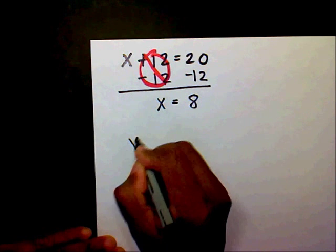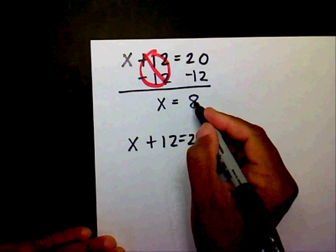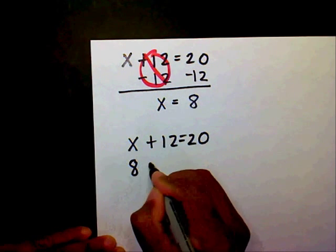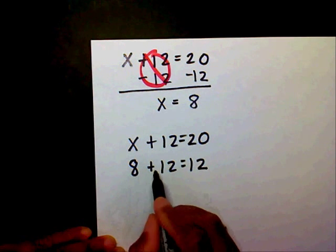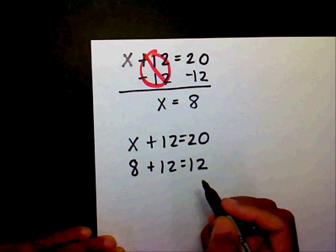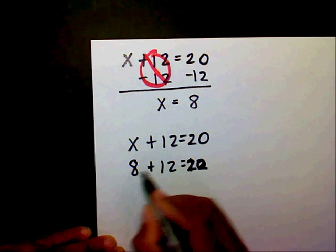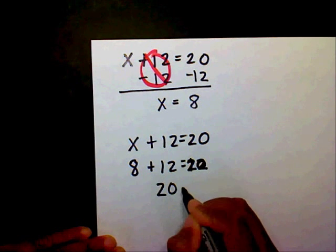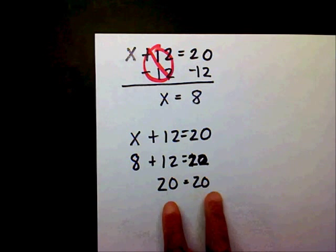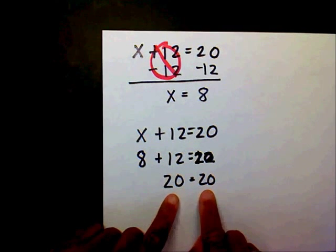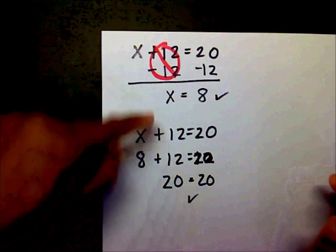Then I hope you checked. You should have wrote the original problem down. Substitute the 8 in for the x. And you have 8 plus 12 over here which is 20. 8 plus 12 is 20 and you have 20 on both sides. Since you ended up with the same value on both sides of the equation, the check is correct.